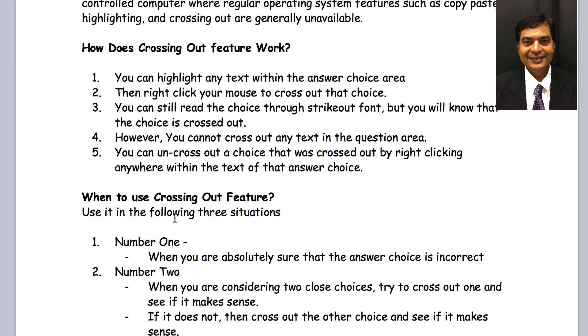What happens if you are unsure or you change your mind? If you change your mind, you can uncross out by the same method by right-clicking it. So, it's a toggle switch, if you will. One time right-click would cross it out. Another time, if you right-click, it's going to bring it back into contention. Really easy to use but it's important that you use it.